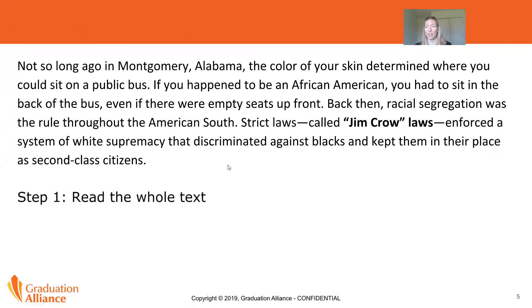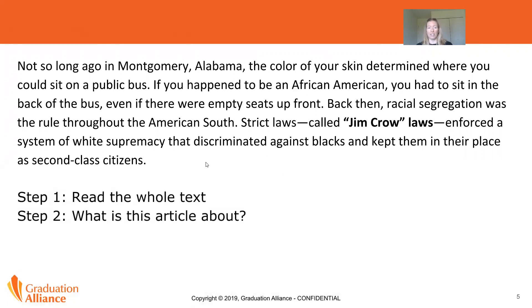So we read the whole text and talked about the vocabulary words that might have been challenging. Step two is: what is this article about? As I read, I noticed it was Montgomery, Alabama. I'm pulling from my prior knowledge — I know there was a bus boycott and segregation. So I'm thinking this has to do with segregation, specifically on a bus, and the Jim Crow laws. So it's about this time period in the American South.